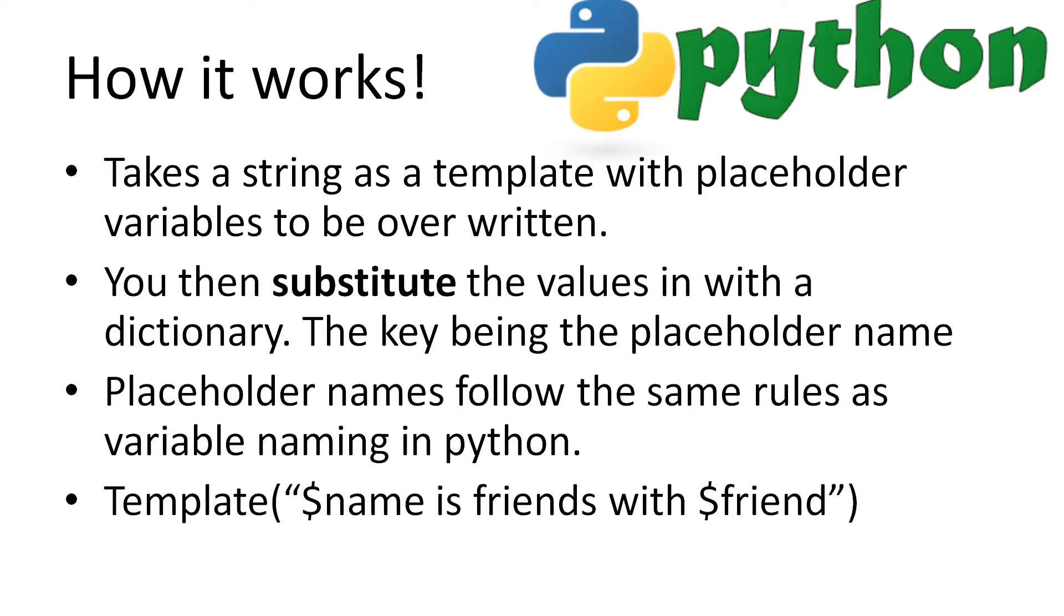So how does it work? The template class takes a string as a template. Within the string we use placeholder variable names with a preceding dollar sign to depict that it's a placeholder. We can then substitute values into the template with the substitute method using a dictionary, where the keys in the dictionary match the placeholder variable names. The return string is the template with all the values rather than the placeholders. It should also be noted that a placeholder variable name should follow the same naming conventions as Python.